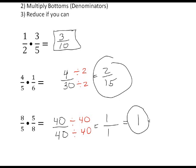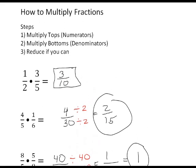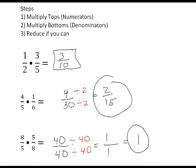Forty divided by forty is one, and forty divided by forty is one. One over one is another way of saying one. This is how you multiply fractions: you multiply the tops, you multiply the bottoms, and then you reduce if you can. Thank you for watching this video.